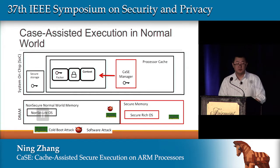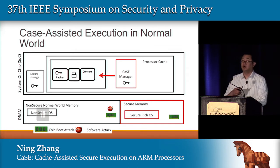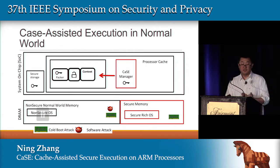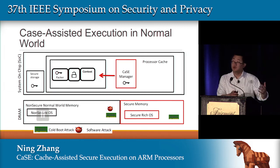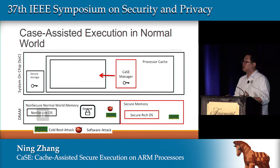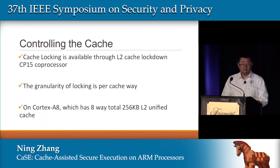Similar to secure mode, we load a key and unpack the application. Once it's unpacked, we can start executing — decryption, encryption, kernel tasks. Once done, when we need to switch tasks, the application context needs to be saved. Because the normal cache is accessible by adversaries, we encrypt the content using the packer again and save the encrypted content in memory. Since the cold boot attack only has read access to memory, it cannot tamper with our encrypted contents.